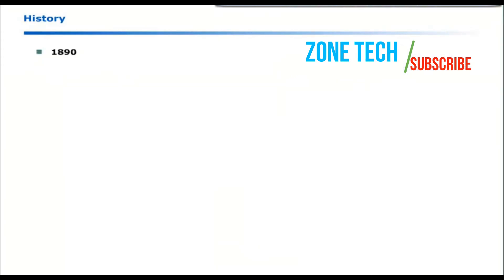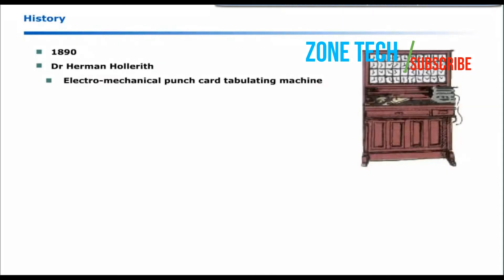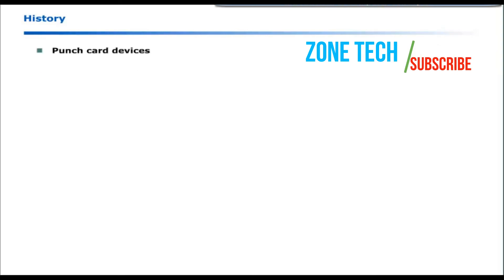During 1890, Dr. Herman Hollerith developed the first electromechanical punch card tabulating machine. Hand punch was used to enter data into cards. A sorter box was used to read and sort these cards. The output was summarized on tabulating dials. A sorter box, punch card devices were introduced from 1920 to 1950.